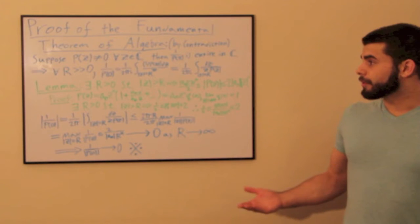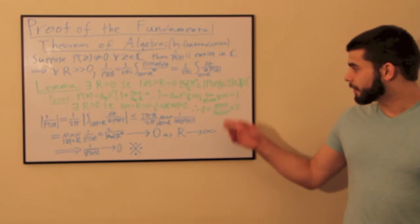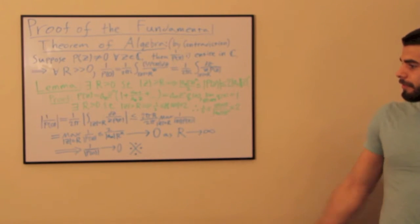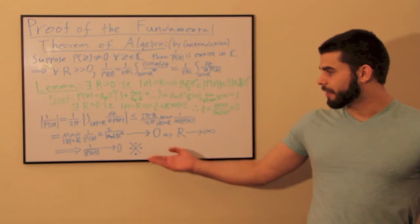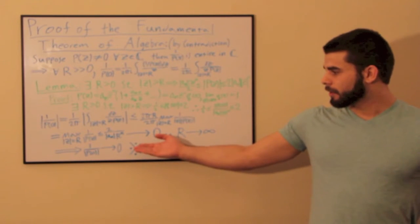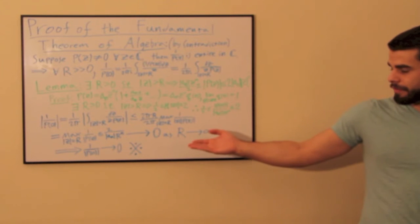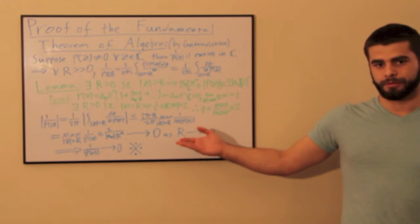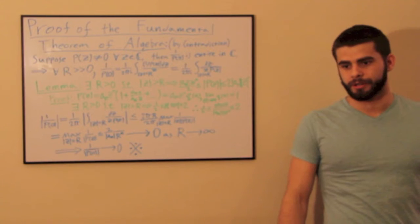And then, we use Cauchy's Theorem, the Cauchy integral formula, and this lemma here to prove that this would cause a contradiction in that one over the polynomial at the z value of zero would go to zero, which would mean that the constant is infinite, and is therefore a contradiction.